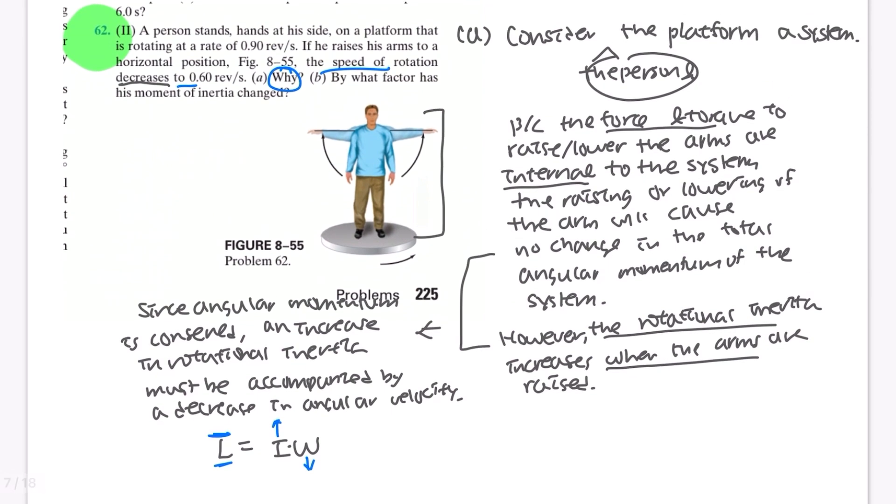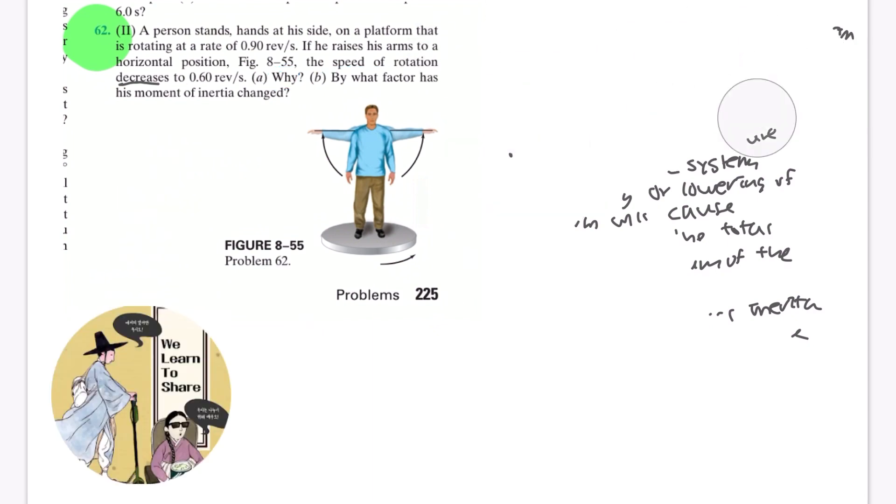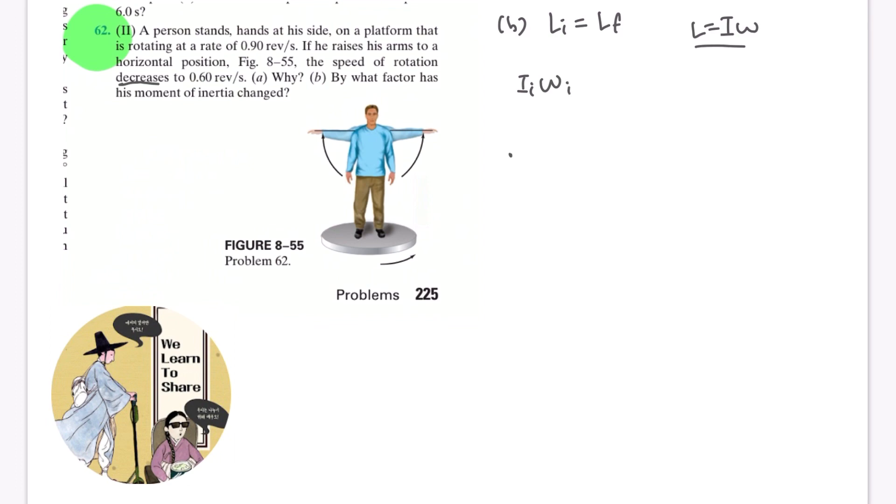And now let's move to step B. By what factor has his moment of inertia changed? So for B, we're going to put the formula that the initial angular momentum will be equal to the final angular momentum, because the angular momentum will be conserved in this system. Because L equals I omega, if we put this value in here, it would be I initial times omega initial equals I final times omega final.